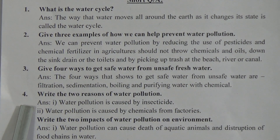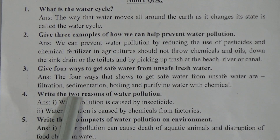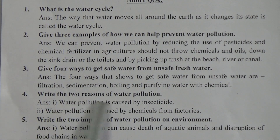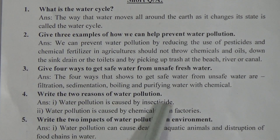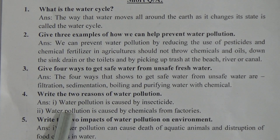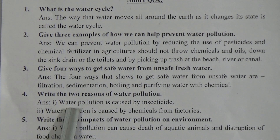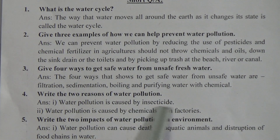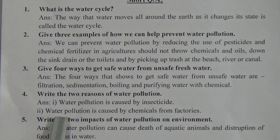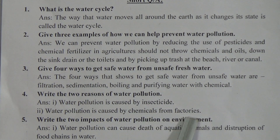Short question number 4: Write down the two reasons of water pollution. The two reasons of water pollution are: number 1, water pollution is caused by insecticides, and number 2, water pollution is caused by chemicals from factories.